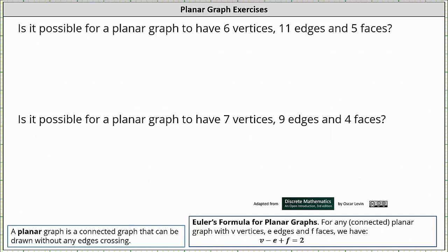A planar graph is a connected graph that can be drawn without any edges crossing. A planar graph must satisfy Euler's formula, which is v minus e plus f equals two, where v is the number of vertices, e is the number of edges, and f is the number of faces.